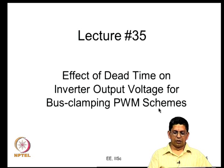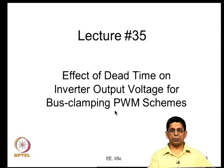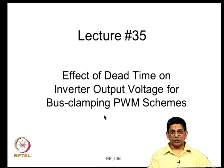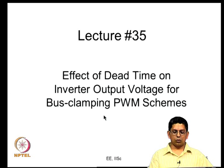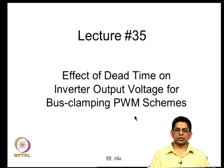We are talking about the effect of dead time on inverter output voltage. The last lecture covered continuous PWM schemes; this lecture focuses on bus clamping PWM schemes, also called discontinuous PWM. In bus clamping PWM, one phase is clamped to the positive or negative bus at any point and the other two phases are switching, so it is called bus clamping. Only two phases switch in a given carrier cycle.